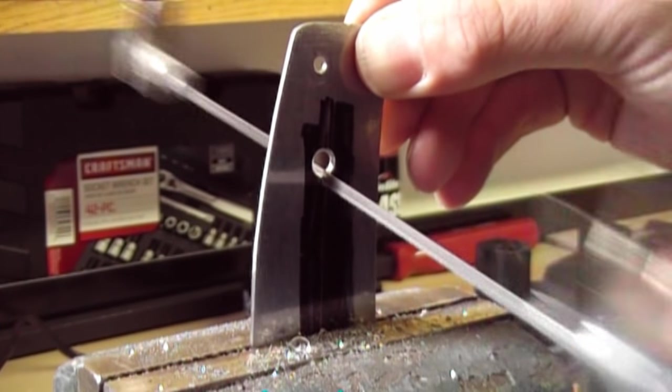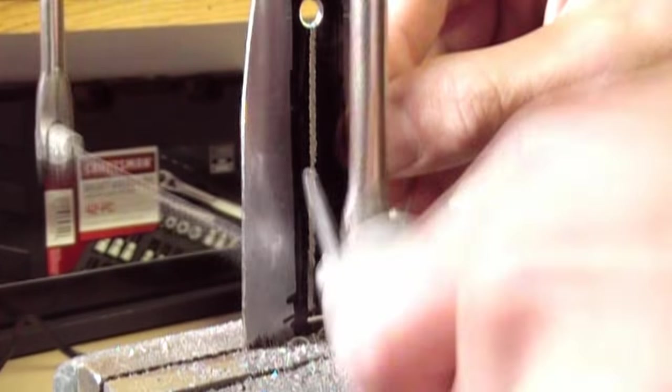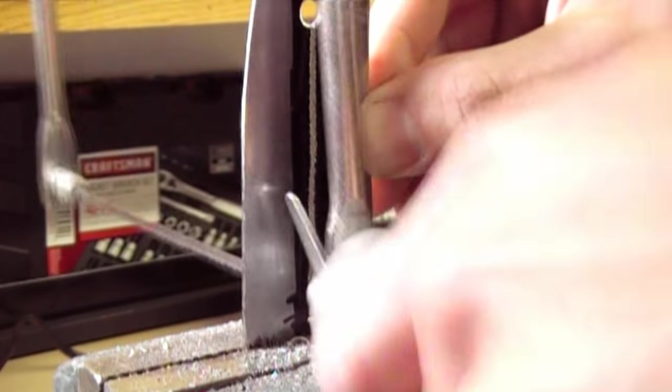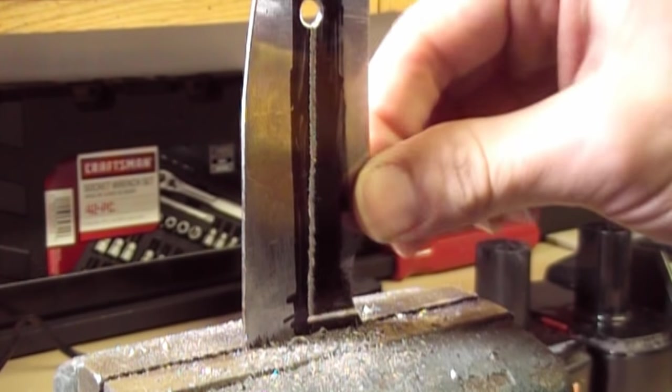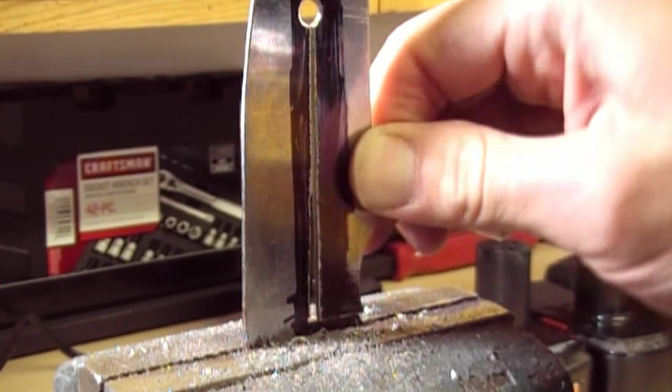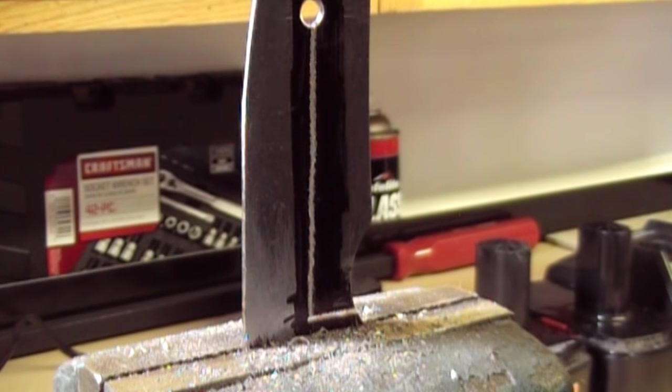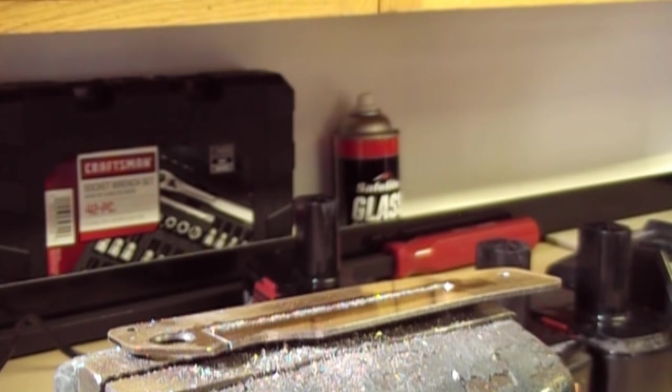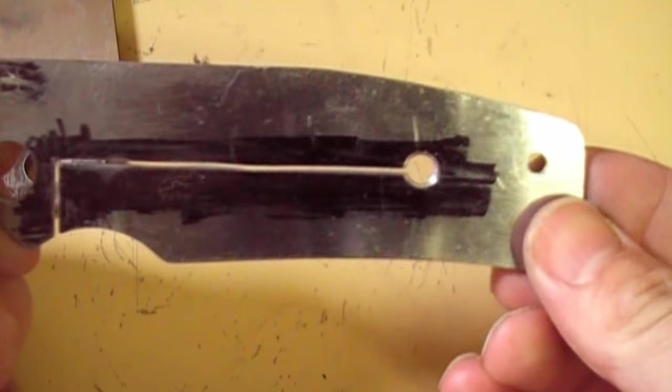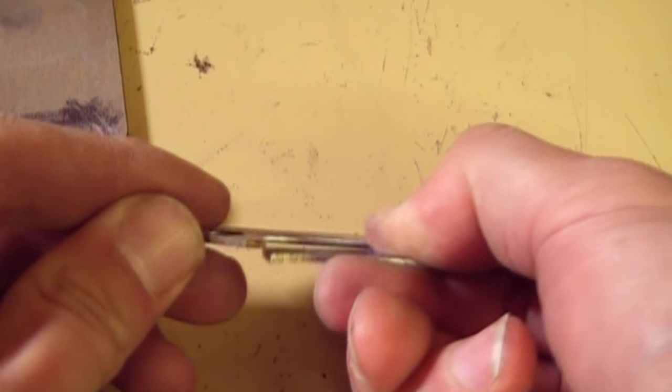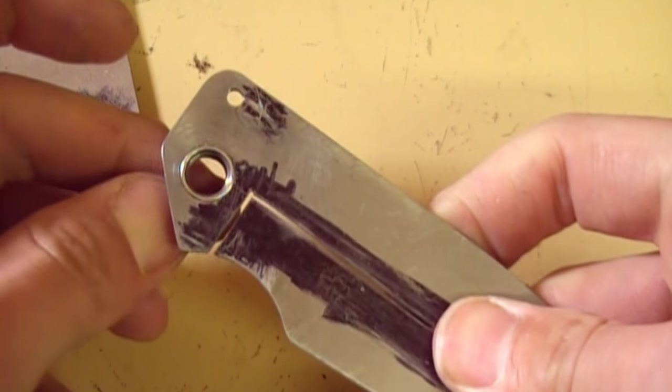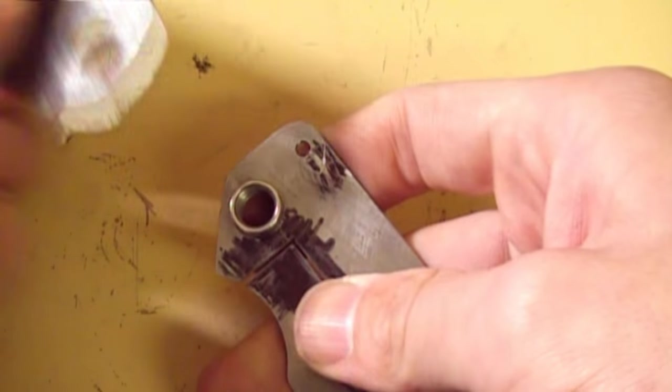Here I'm cutting the lock bar. I've got good movement and I've left myself plenty of room to grind in the final locking surface.